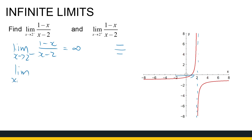Using the same argument as x approaches two from the positive side: my numerator is again negative, but my denominator is now a positive number very close to zero — something like 2.000001. So I've got a negative number divided by a positive number close to zero, which gives a very large negative number — heading to minus infinity. That's how we look at it algebraically.